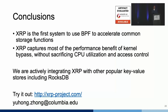In summary, XRP is the first system to use BPF to accelerate common storage functions. XRP captures most of the performance benefit of kernel bypass without sacrificing CPU utilization and access control. We are actively integrating XRP with other popular key-value stores, including RocksDB. XRP is open source, so try it out and see whether it can make your database faster.